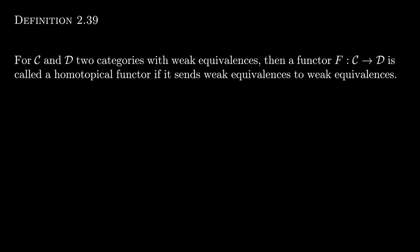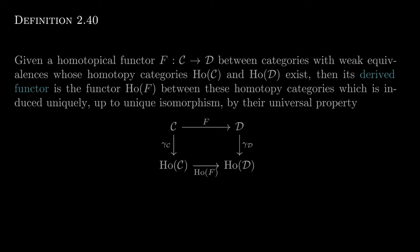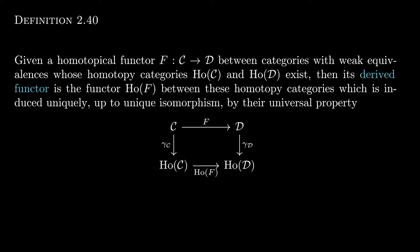Now consider the corresponding homotopy categories of these categories. The functor F followed by the localization functor on D is a functor from C to the homotopy category of D, and it sends weak equivalences to isomorphisms. Thus there exists a functor from the homotopy category of C to the homotopy category of D by the universal property, unique up to unique isomorphism.